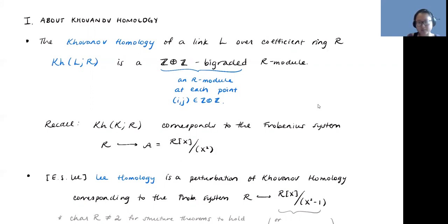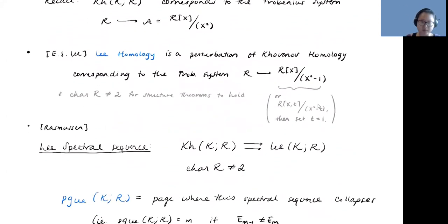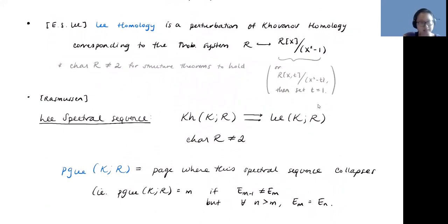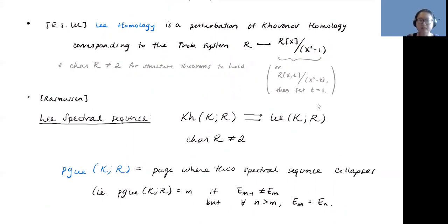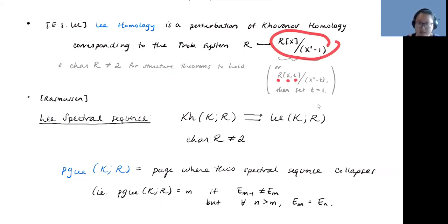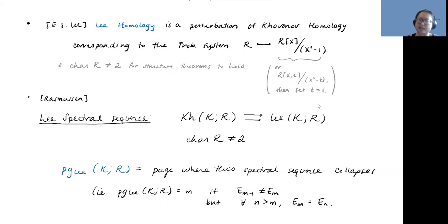Khovanov homology corresponds to this Frobenius system. Now I'm going to talk about some perturbations of this. Instead of using the universal theory, I want to think about Lee homology, which is just changing the quadratic by separating the two roots—so now we have two roots that are plus and minus one. This is related to another version of universal Khovanov homology: R adjoin one indeterminate T and X, mod out by X²−T, and then set T equal to one.